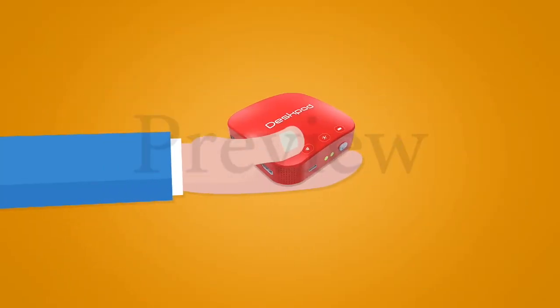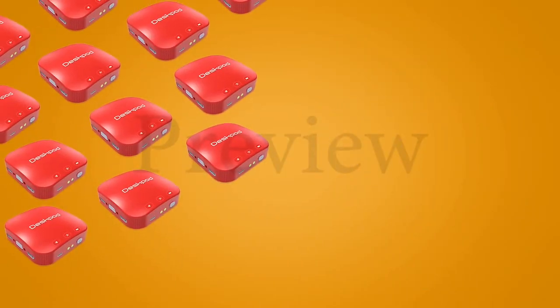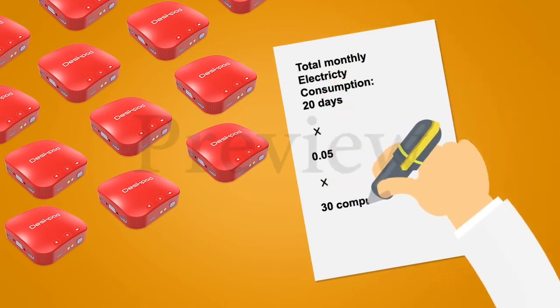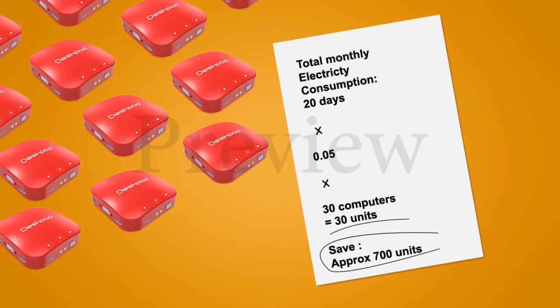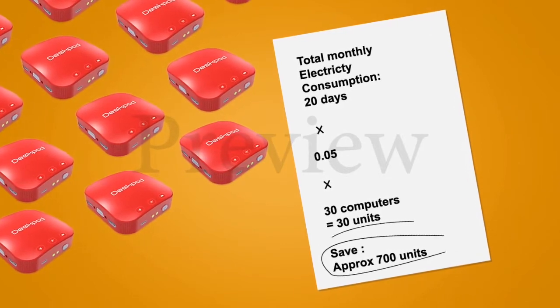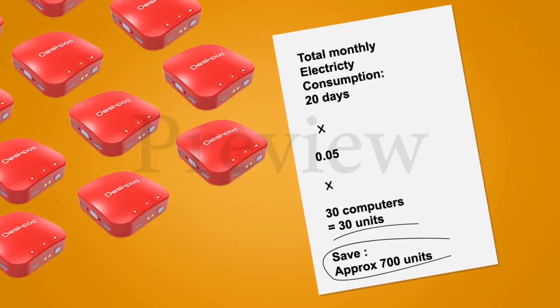On replacing it with DeskPod, he pays monthly for 20 days times 0.05 times 30 desk pods equals 30 units. DeskPod helped him save huge money on monthly electricity bill, approximately 700 units.